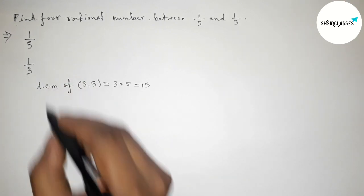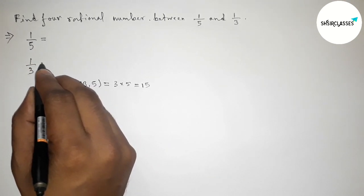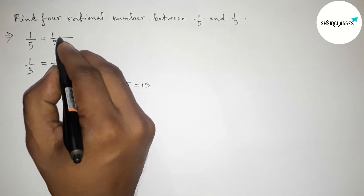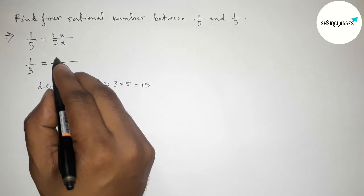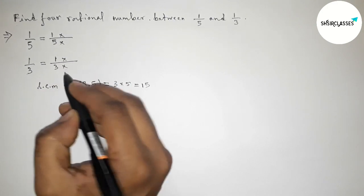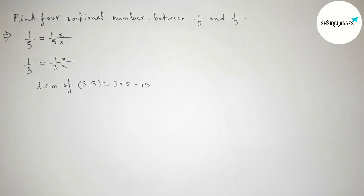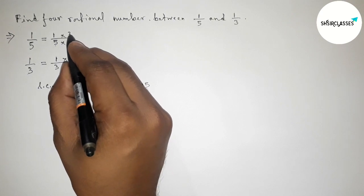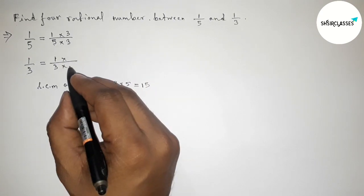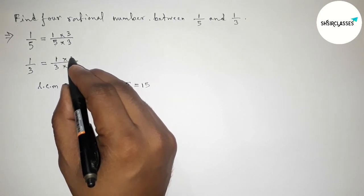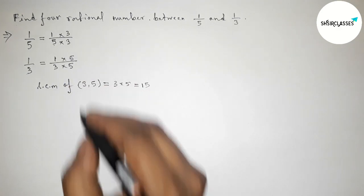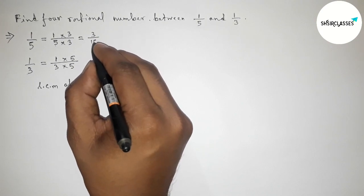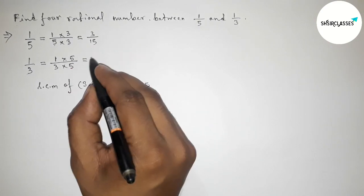We have to make the denominators 15. So now write down 1 by 5 and 1 by 3, taking multiplication up and down. For 1 by 5: 5 threes are 15, so multiply 3 up and down. For 1 by 3: 3 into 5 is 15, so multiply 5 up and down. This gives us 3 by 15 and 5 by 15.